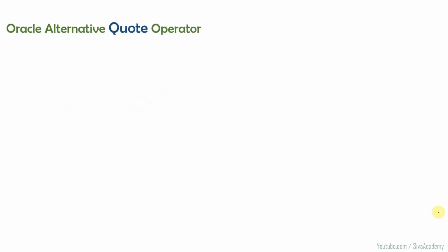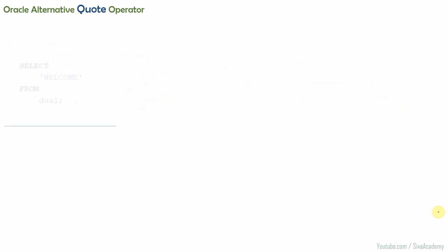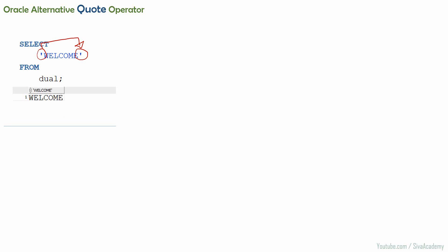Let us first understand what is a quote operator. Whenever we are using a string in Oracle, we used to mention the single quote around it. For example, SELECT 'welcome' — there is a single quote before 'welcome' and a single quote after 'welcome'. This is the delimiter that represents where the string starts and where the string ends. Whenever we want to display a string, we need to enclose it within single quotes, and this will display 'welcome'.